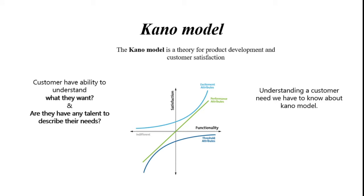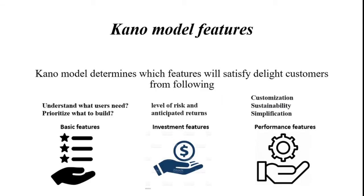The Kano model is a theory for product development and customer satisfaction. Customers have difficulty with two questions: what they want from the market, and whether they have the ability to describe their needs to the market. To understand customer needs, we need to know about the Kano model. The Kano model has its own features: basic features, investment features, and performance features. The Kano model determines which features will satisfy and delight customers.